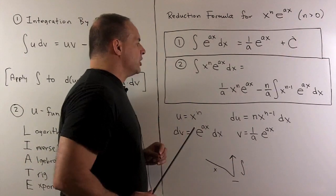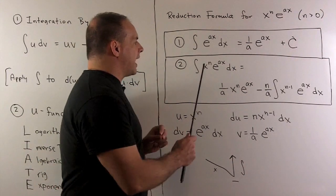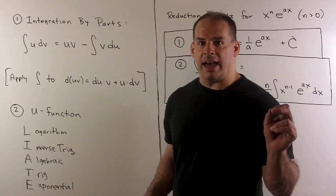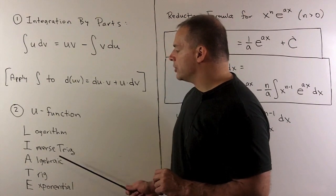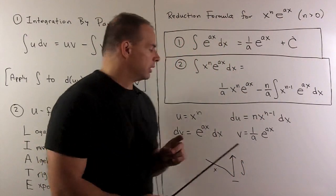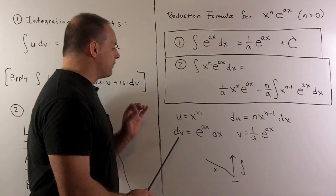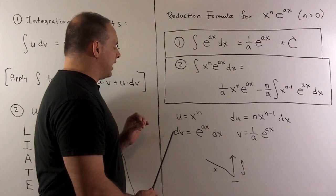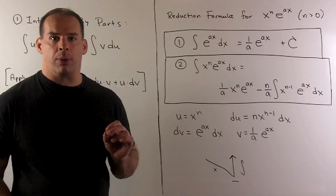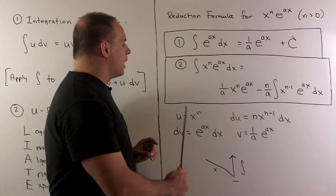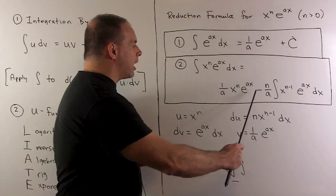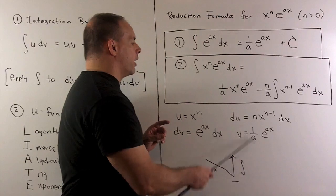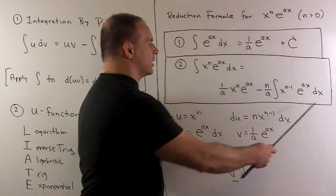Now, to see this is just integration by parts. So, we have x to the n e to the ax. We go to our mnemonic and we see the algebraic x to the n comes before exponential. So, x to the n is going to be our u function. Whatever is left over, we call dv. So, it's e to the ax dx. I solve for du. We take the anti-derivative to get v and then I apply integration by parts. So, I multiply down the diagonal. That's that term there. We subtract off what we get. We take the indefinite integral of the product going up this column. So, that's this part right here.